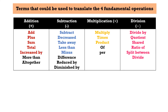In a table, we have the summary. For addition we have: add, plus, sum, more than, and altogether. For subtraction: subtract, decreased, take away, less than, minus, difference, reduced by, and diminished by. For multiplication we use: multiply, times, product of, and per. For division we use: divided by, quotient, shared, ratio of, split between, and divide.